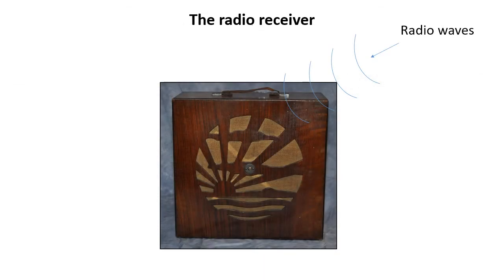The radio signal from the transmitter is received by the radio receiver's antenna, where the original sound from the studio is extracted so that it can be heard by the listener. So how does the radio receiver do this? The rest of this video will explain.